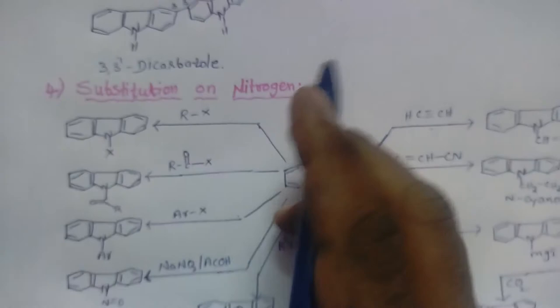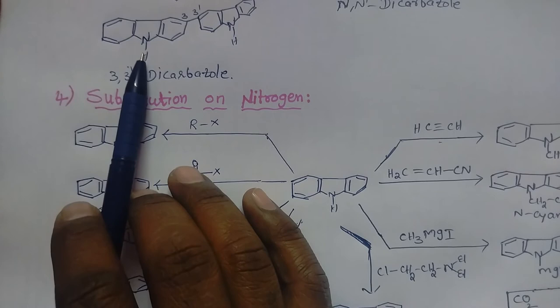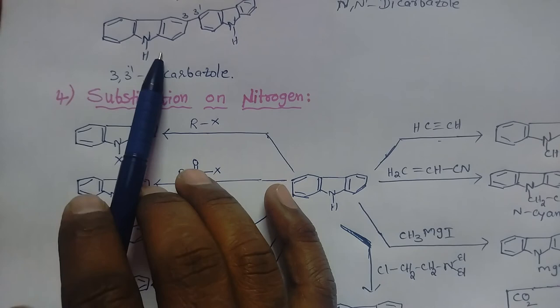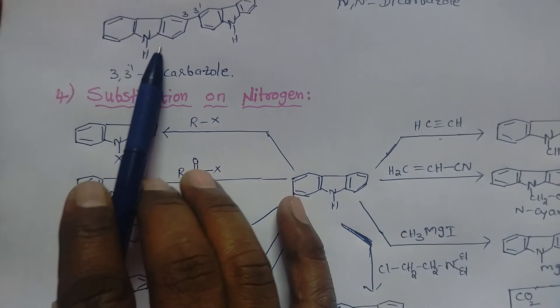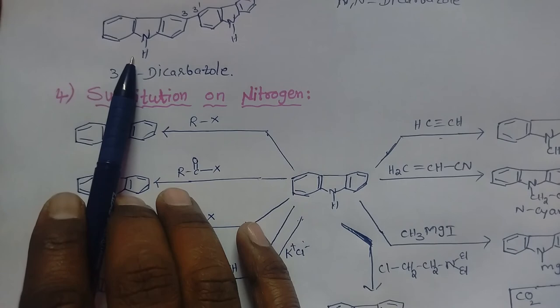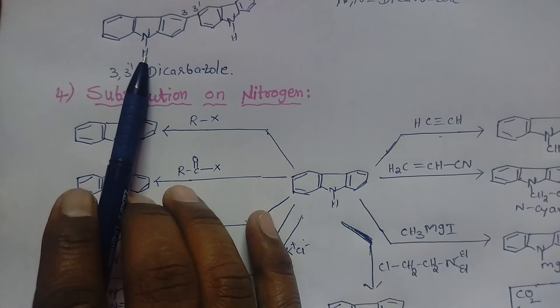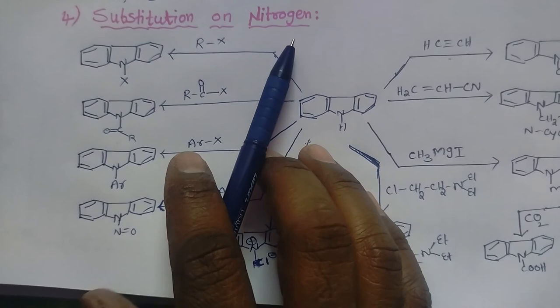Now we go to substitution reactions that take place on the nitrogen. In carbazole, one hydrogen is present on the nitrogen. Because the nitrogen of the pyrrole ring is involved in resonance, the carbazole easily loses its H+ ion and thus exhibits some acidic character. So we can easily substitute other groups in place of that hydrogen.